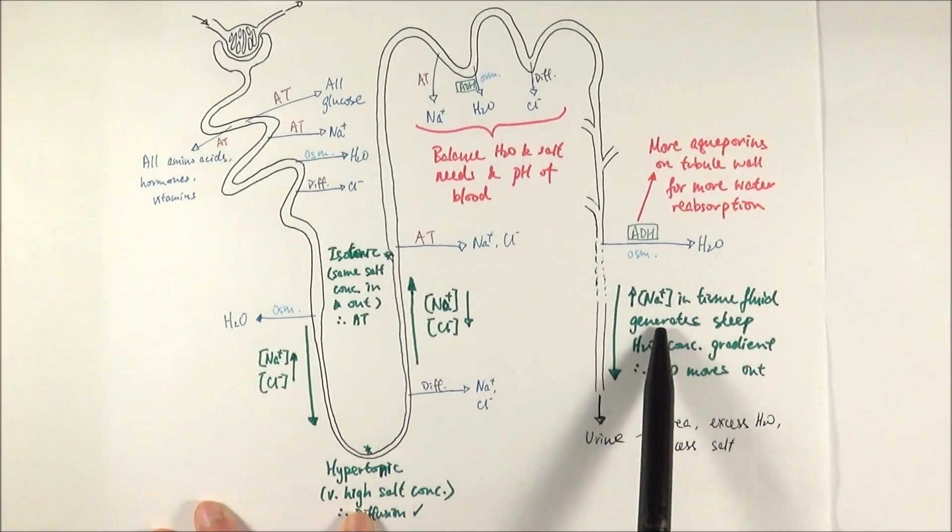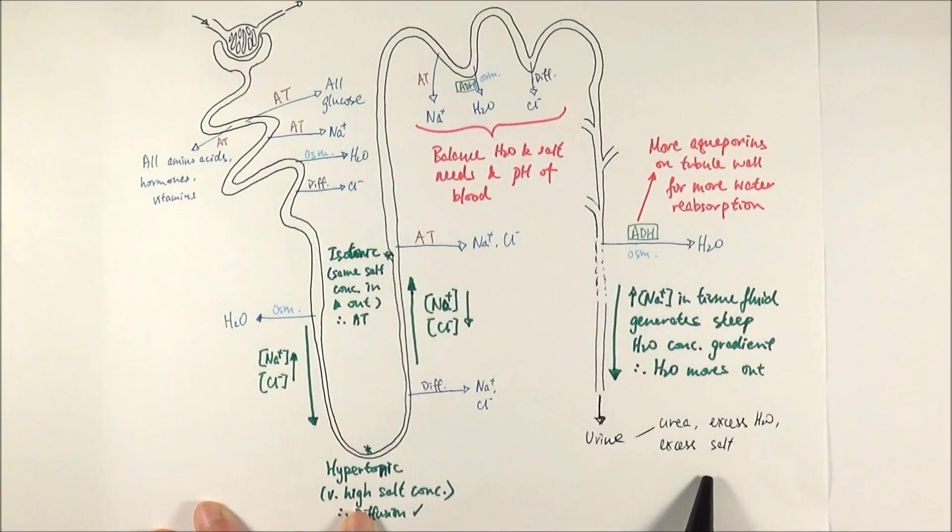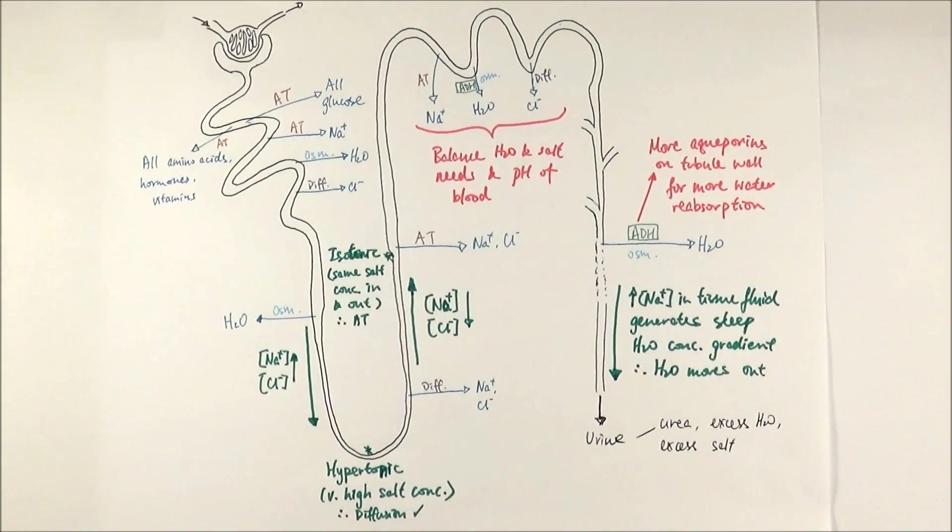Also, the concentration of the tissue fluid in terms of the sodium concentration can also generate a steep water concentration gradient so that water can move out naturally as well. Finally, we get urine which consists of urea and any excess water and salts to be excreted in the final bit.